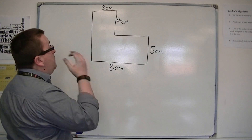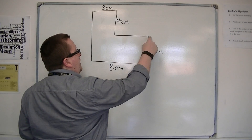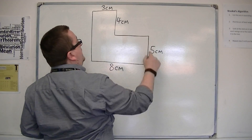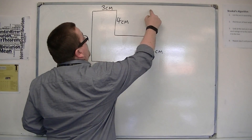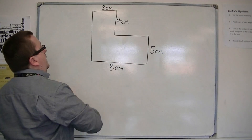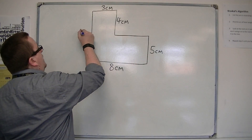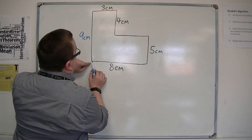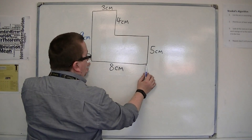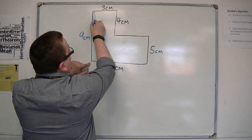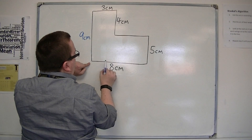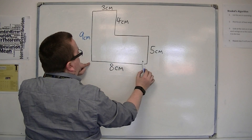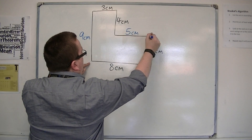So if you know that this side is five centimetres and then it goes up another four centimetres, then the whole thing must be nine centimetres high, so this length must be nine centimetres. Likewise, if the whole length of the shape is eight centimetres but that portion is three, then what's left must be five centimetres — so this section is five centimetres long.